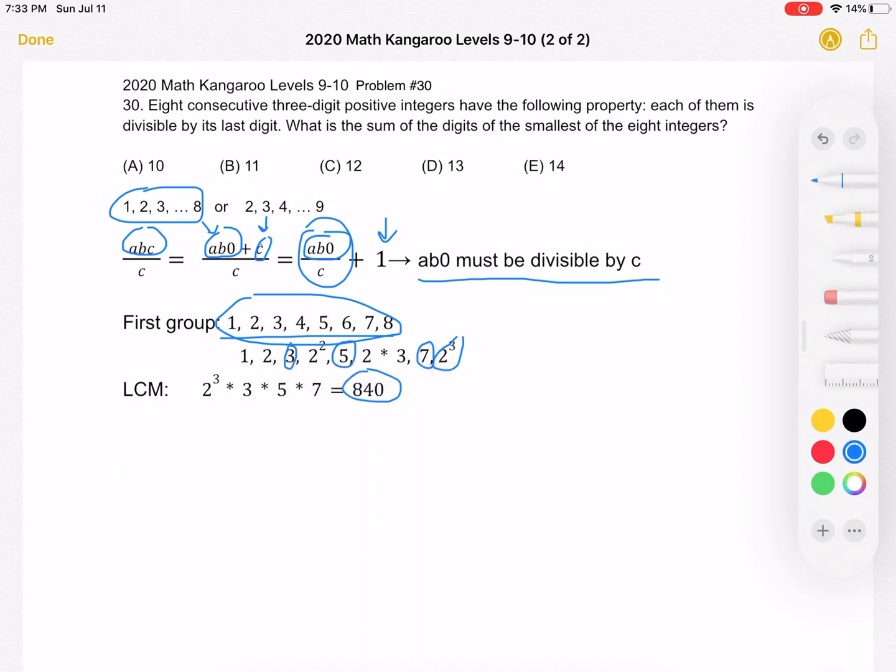Our AB0 is equal to 840. So, our consecutive numbers would be 841, 842, and so on until 848. This seems pretty good so far. They're all three-digit numbers.